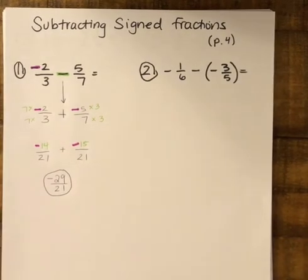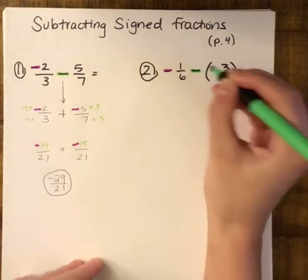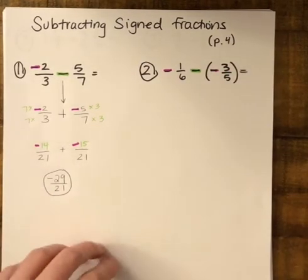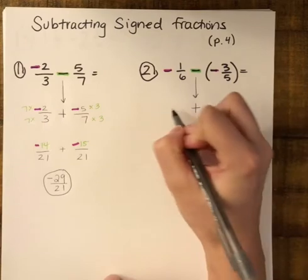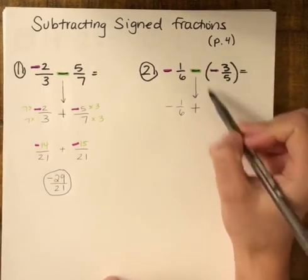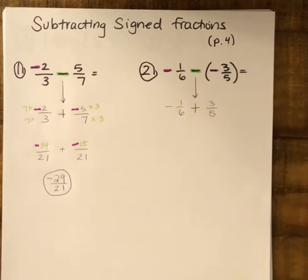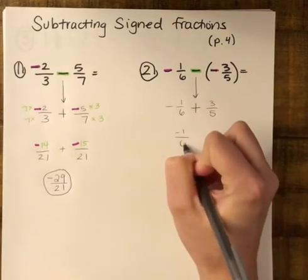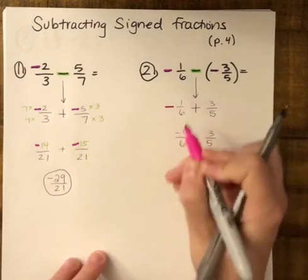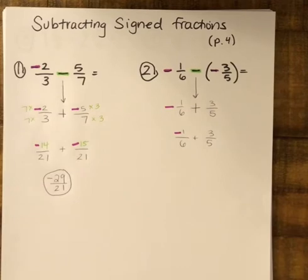In problem 2, I see two negative numbers being subtracted from each other. The first thing I do is change that subtraction into addition: the first number stays exactly the same, and for the second number I add its opposite. The opposite of negative three-fifths is positive three-fifths. Once changed to an addition problem, I bump the negative sign up to the top of the fraction. My two numbers have different denominators — 6 and 5 — so I'll find a common denominator, which is 30.